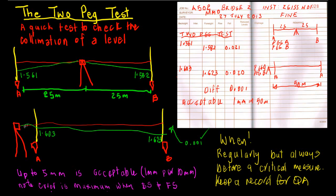Then what we do is take a reading on A and treat that as a backsight, 1.603. Then we take another reading on B, 1.623, and we subtract those to get a fall of 0.020.